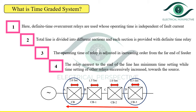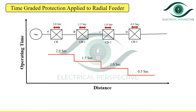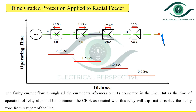The minimum time interval allowed between two adjacent circuit breakers depends on its own clearance time plus a small time for safety margin. In the example of the time graded system applied to the radial feeder, if a fault occurs nearer to the load end, the fault current flows through all the circuit breakers and CTs connected in the line. But since the operating time of the relay at point D is minimum, circuit breaker CB3 associated with this relay will trip first to isolate the faulty zone from the rest of the system.